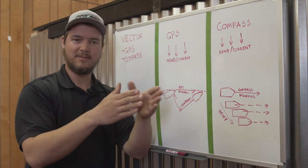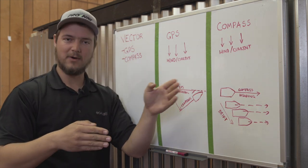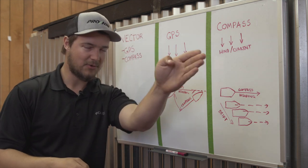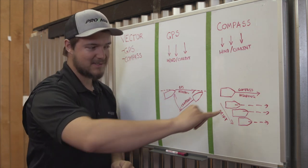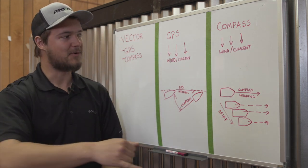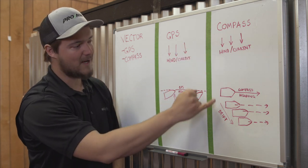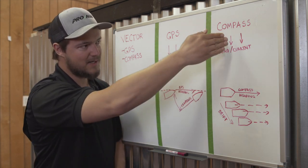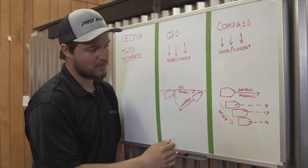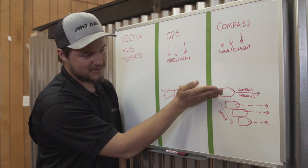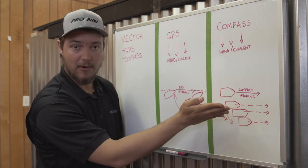So what that means is I'm telling my motor, my boat, that I always want to face due north. And in this example, we're always facing due north, but the wind is actually a west wind. So as this wind is coming across the port side of my boat, my boat is actually drifting downwind.